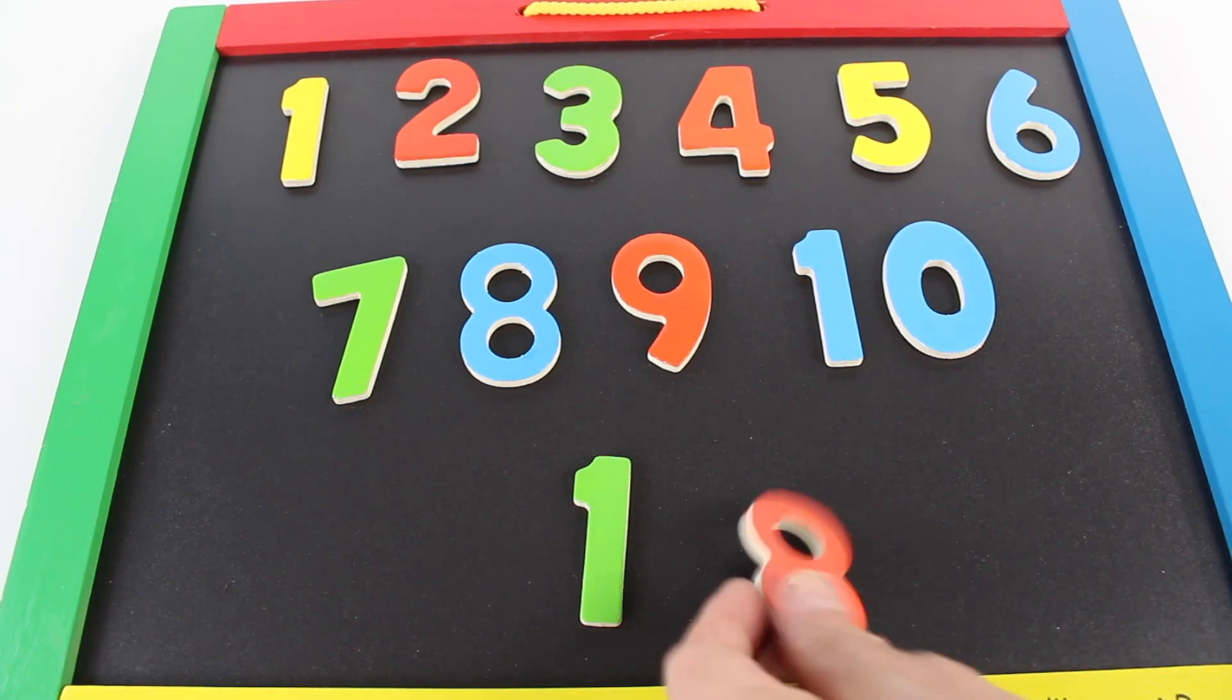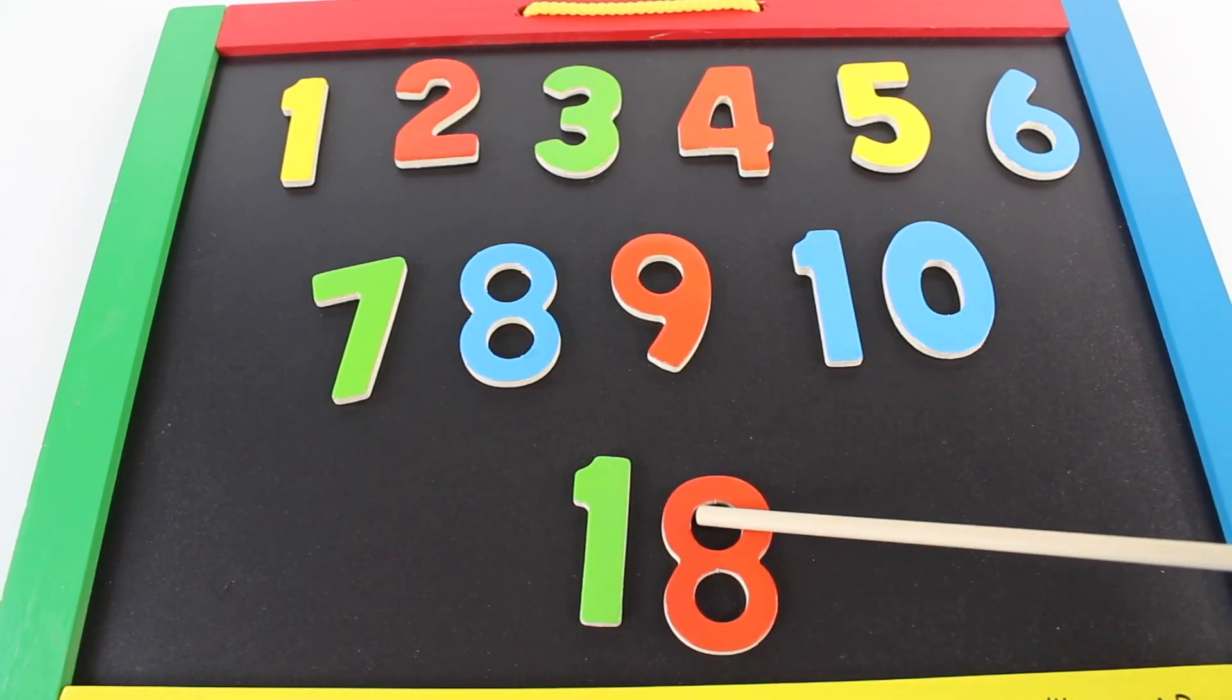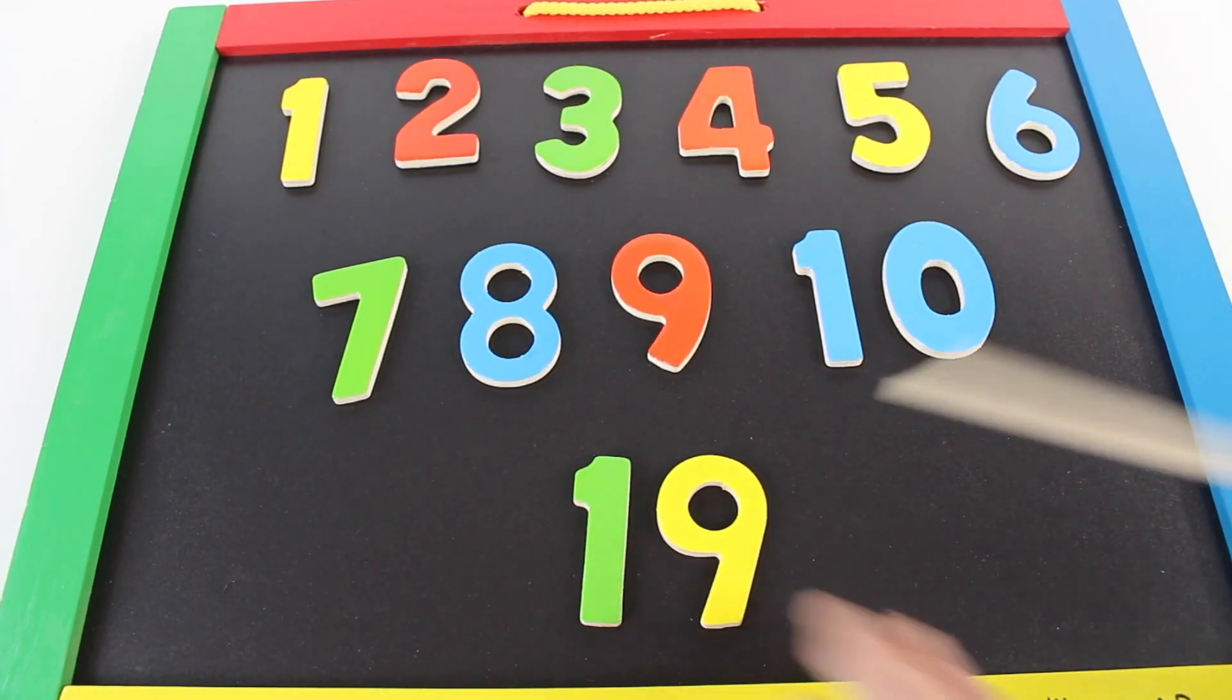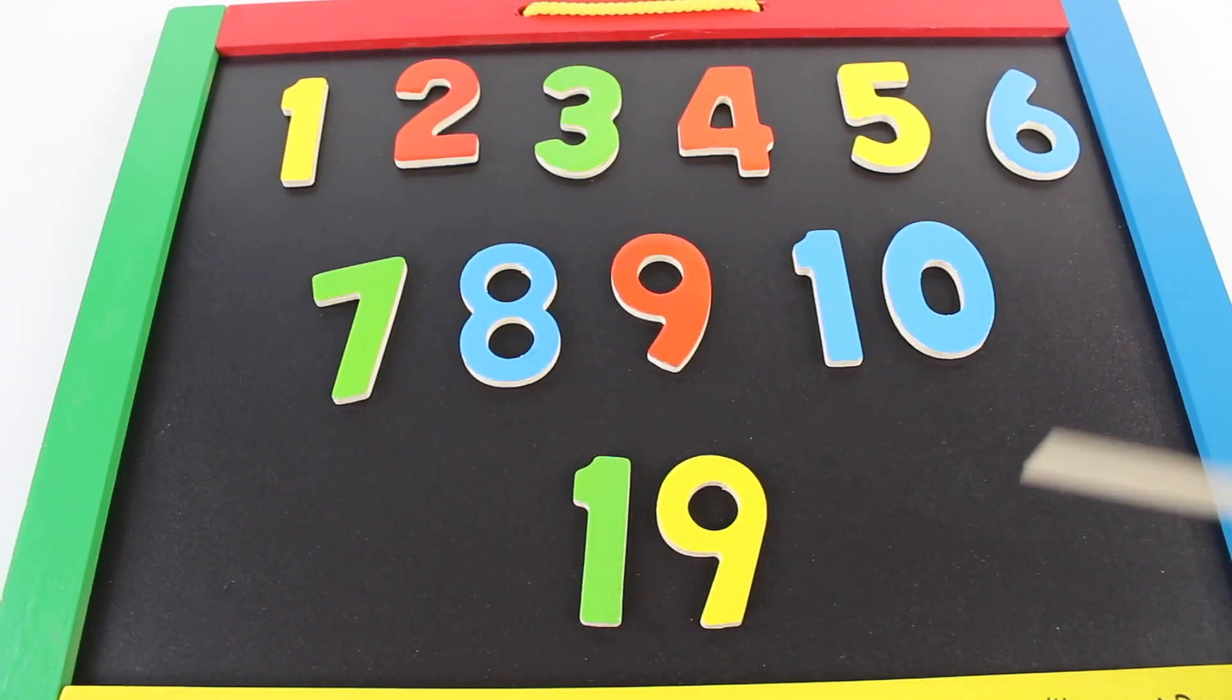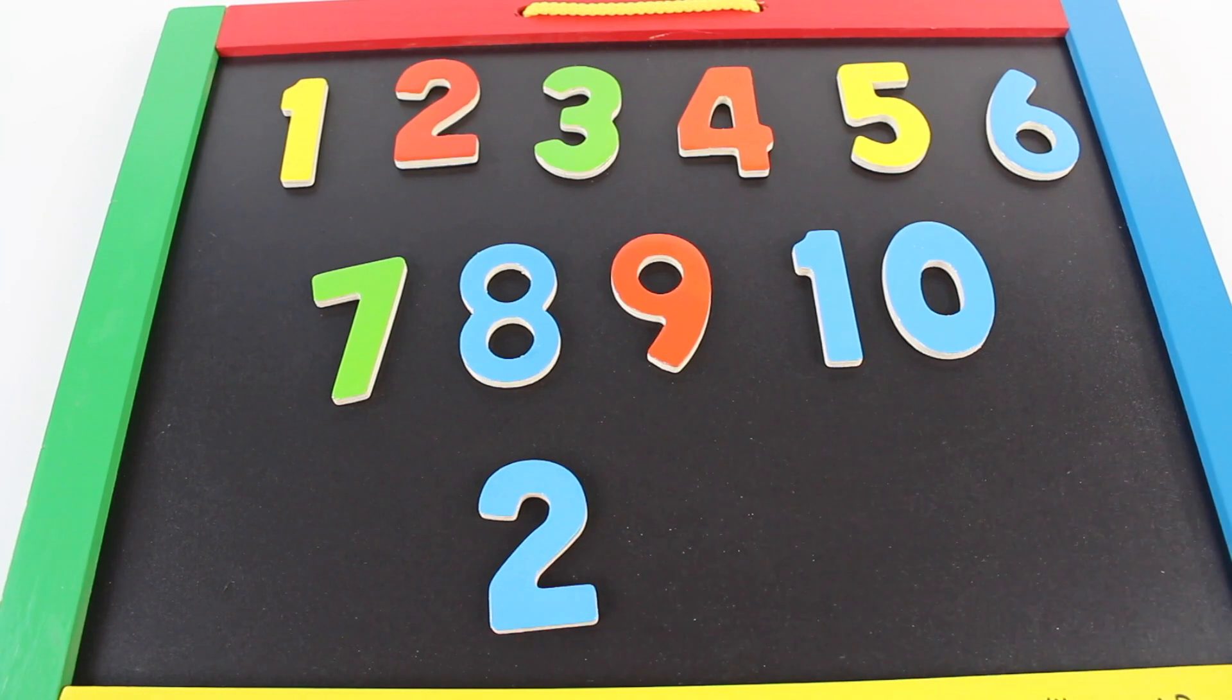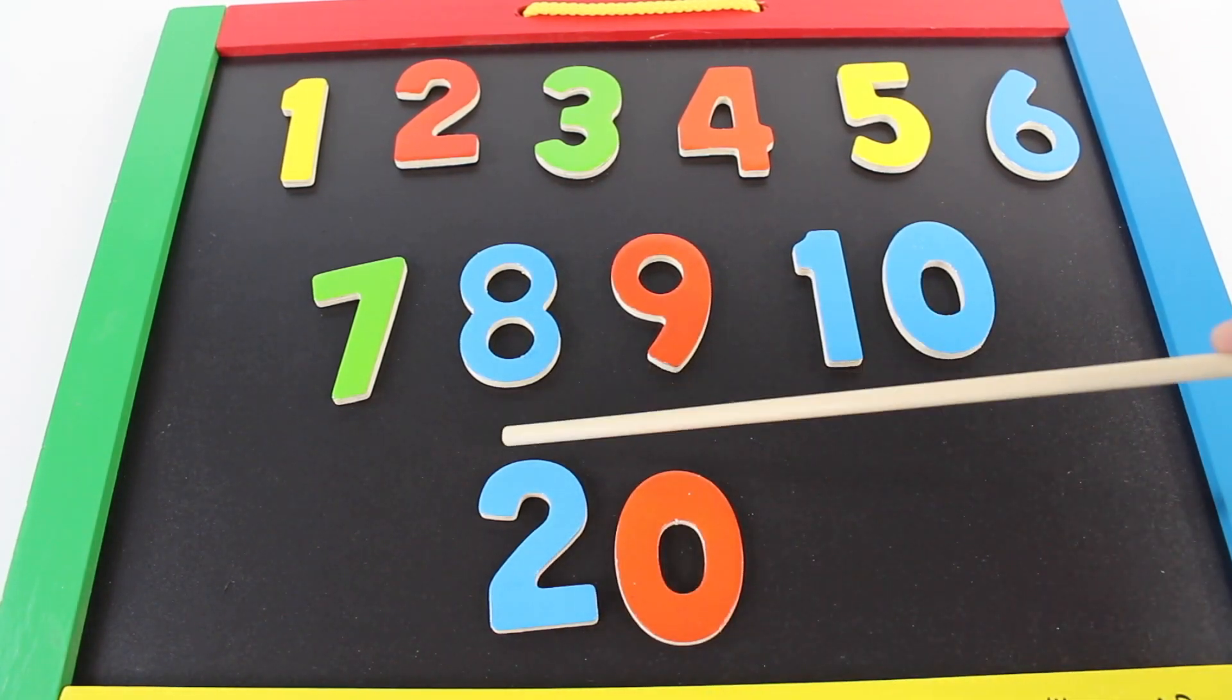One and eight make eighteen. One and nine make nineteen. Two and zero make twenty.